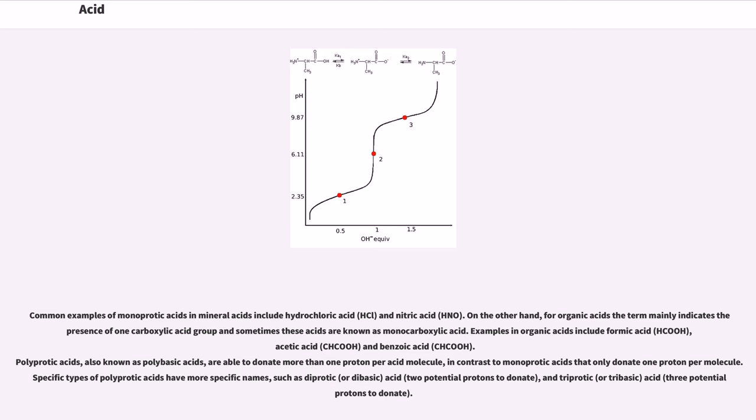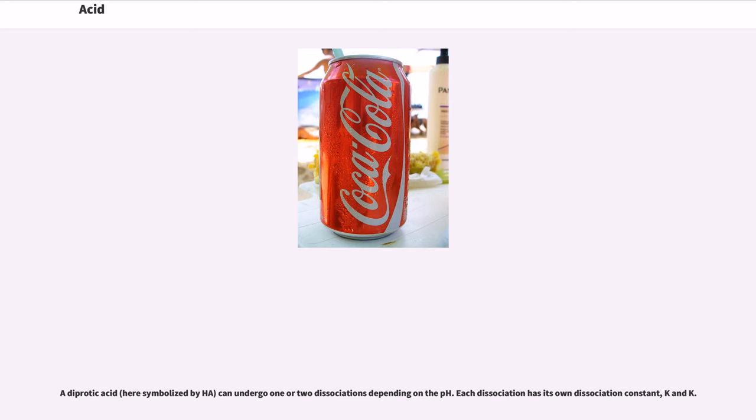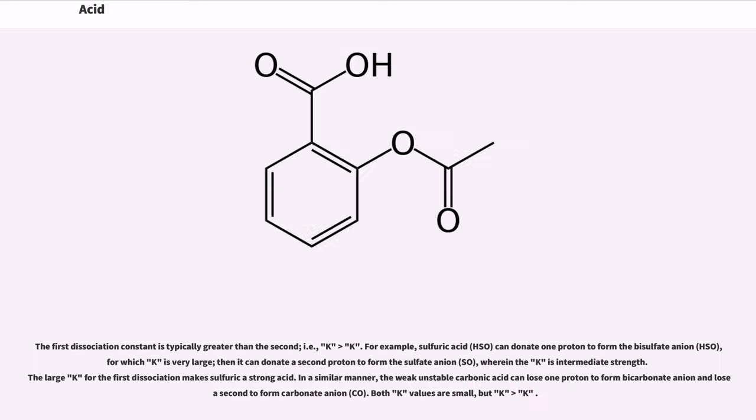Polyprotic acids, also known as polybasic acids, are able to donate more than one proton per acid molecule, in contrast to monoprotic acids that only donate one proton per molecule. Specific types of polyprotic acids have more specific names, such as diprotic acid (two potential protons to donate) and triprotic acid (three potential protons to donate). A diprotic acid, here symbolized by H2A, can undergo one or two dissociations depending on the pH. Each dissociation has its own dissociation constant, Ka1 and Ka2. The first dissociation constant is typically greater than the second, i.e., Ka1 > Ka2.